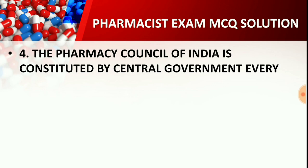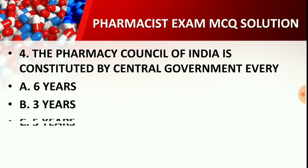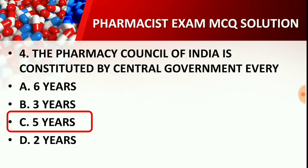Question number 4: The Pharmacy Council of India (PCI) is constituted by the central government after every how many years? Options: six years, three years, five years, or two years. This question is asked very frequently. The correct answer is Option C — five years. PCI is constituted by the central government every five years.